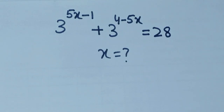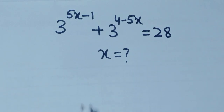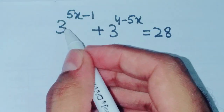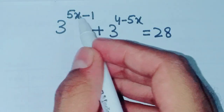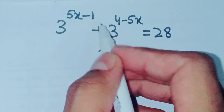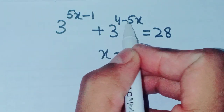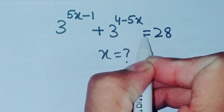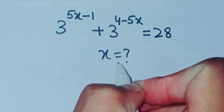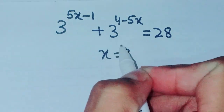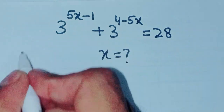Assalamu alaikum, welcome everyone. Today I am going to solve a very exponential equation. The equation is 3 power (5x minus 1) plus 3 power (4 minus 5x) is equal to 28. Find X. Let's start the solution.